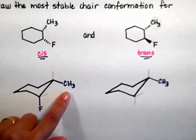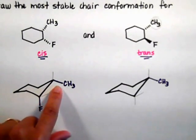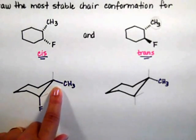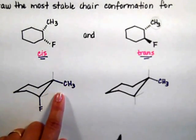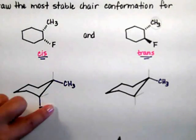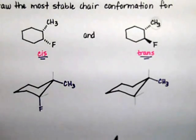If I was to flip this chair, the fluorine would go equatorial, the methyl would go axial, and an axial methyl is less stable. So automatically, this right here is the most stable chair conformation for this compound, for the cis isomer.